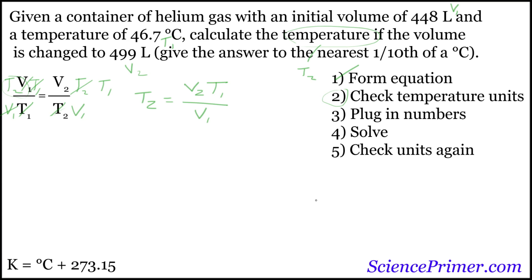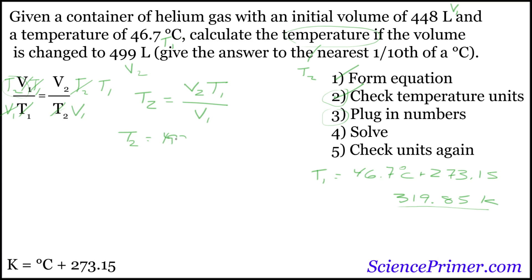Now check temperature units. T1 is given as 46.7 degrees Celsius, so we add 273.15 to get 319.85 Kelvin. Now plug in the numbers: T2 equals V2 (499 liters) times T1 (319.85 Kelvin) divided by V1 (448 liters).